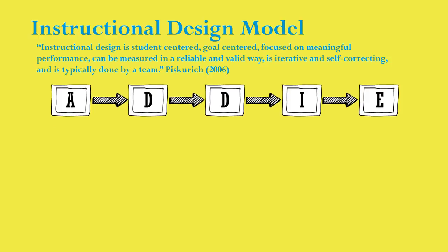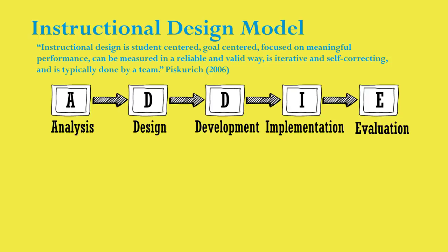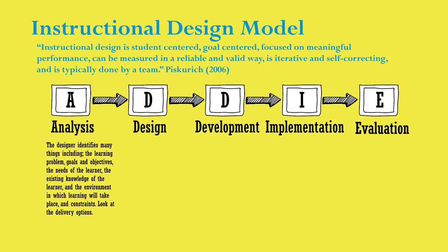The ADDIE model of instructional design is a systematic model consisting of five phases: analysis, design, development, implementation, and evaluation. The model's original authors are unknown, but there are multiple variations and versions of the model that exist today. With this model, each step of the process feeds the next. During the analysis phase, the designer identifies many things including the learning problem, goals and objectives, the needs of the learner, the existing knowledge of the learner, and the environment in which learning will take place, and constraints. Additionally, during the analysis phase, the designer will look at the delivery options. The key word to this phase of the instructional design process is identify.